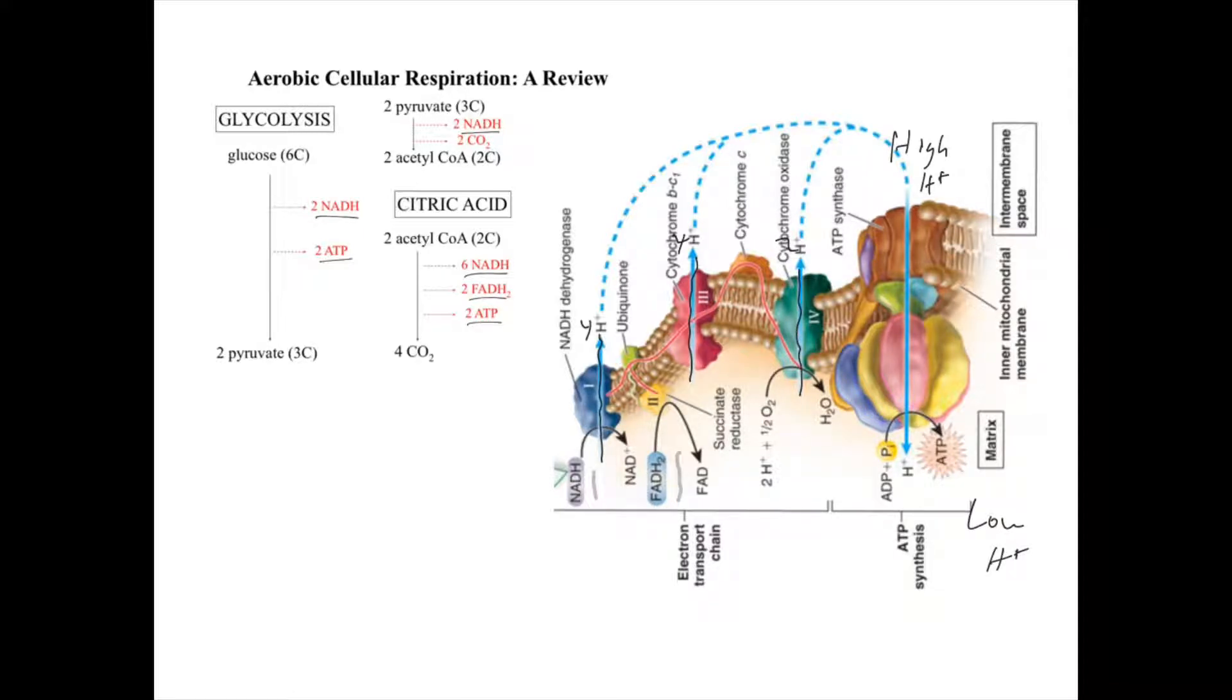That gradient is used as hydrogen ion protons flow through the ATP synthase. That powers the energy required to make ADP and convert it into ATP.